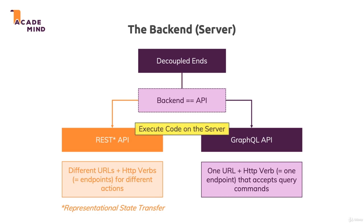In both scenarios, we execute code on the server, and in both scenarios, we don't directly talk to the database. GraphQL and query commands might all sound a bit like we're already talking to a database, but always keep in mind: from your React app, you always send requests to your Node Express app, no matter if that's built as a REST API or a GraphQL API. It just influences how the requests look, but in both cases you talk to your Node Express app. That Node Express app will then do something based on the action triggered by your path-verb combination or your query command, and then it's your Node Express server which will talk to a database.